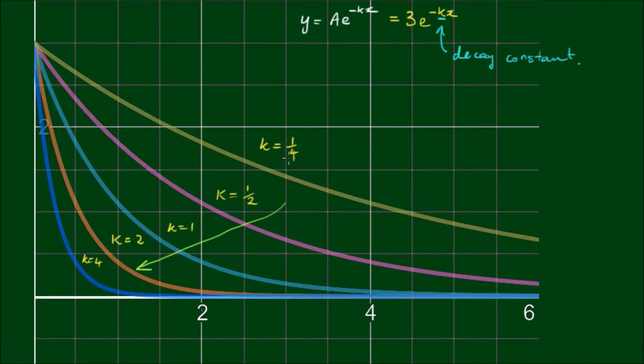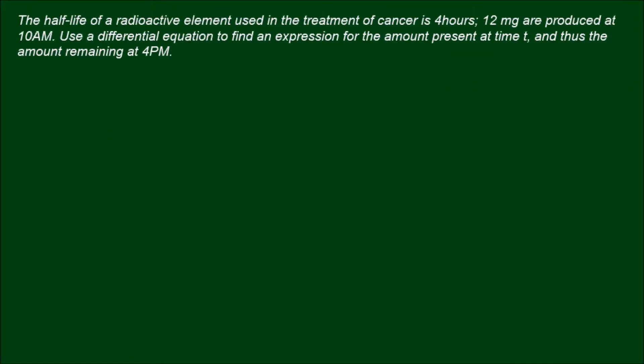Let's do an example of radioactive decay. Now half-life is commonly used to describe the rate of radioactive decay. And what it simply means is how long it takes for the radioactive element to decay to half of its original amount. So let's set up this differential equation. Let's let M equal the mass of the radioactive element at time t.